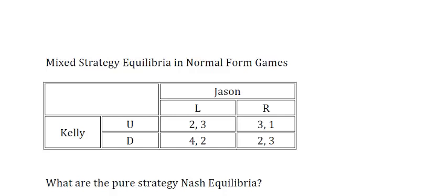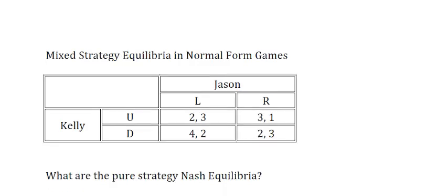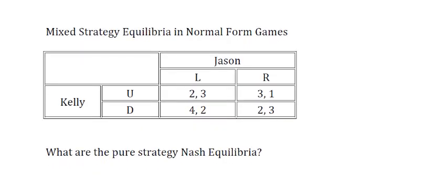Let's look at mixed strategy in normal form games, and we'll do this through an example. We have Kelly and Jason who are playing the normal form game that you see here. Before we start looking for mixed strategy equilibria, let's ask what are the pure strategy equilibria of this game? To do this, let's go through all the possible combinations of strategies to see if any one of them is an equilibrium.